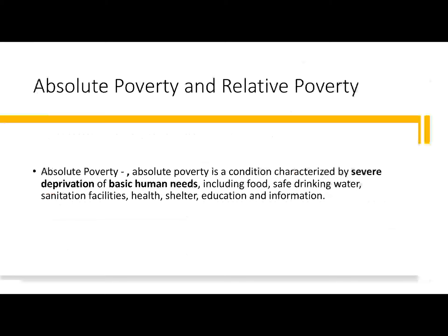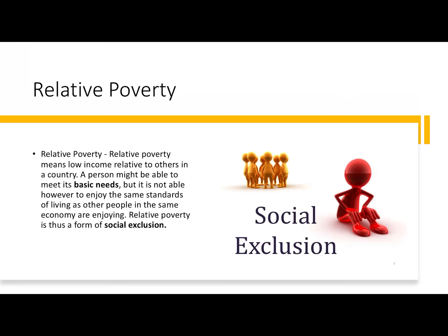Absolute poverty is extreme poverty where one cannot afford the basic necessities of life, including food, water, health, shelter, education, and information. In relative poverty, one might be able to afford basic needs, but relative to the present standards of society and the standard of living of fellow social members, one cannot afford that much. Relative poverty hints at social exclusion, and it is used by important bodies like the OECD and in Europe.